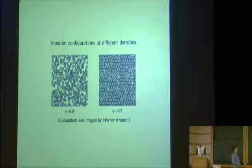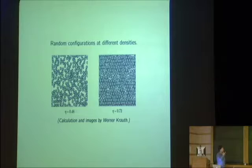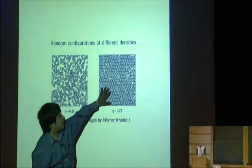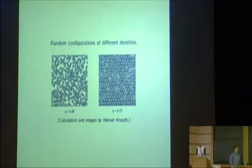These pictures are by Werner Krauth, who is one of the world's experts in computational statistical physics. Actually simulating these things on computers is a whole art and science. You can see that these things are starting to get closer to the hexagonal packing, where the relative density is about 72%, eyeballing it.